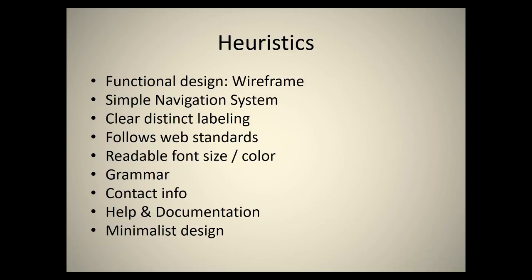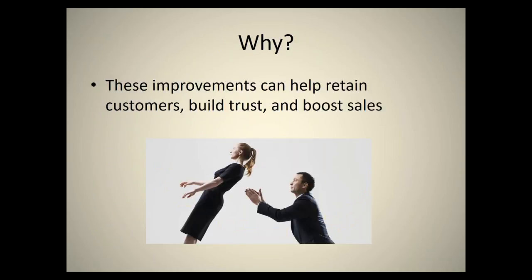We look at the functionality of the site — the wireframe, which is basically the blueprint of each page: where menus are, where videos are placed, PDF files, pop-up forms, etc. For menu navigation, we want it to be simple and labeled correctly with clear, distinct, short labels. We check content for grammar mistakes, readable font size and color, and we make sure contact information is easy to find, along with help and documentation if needed.